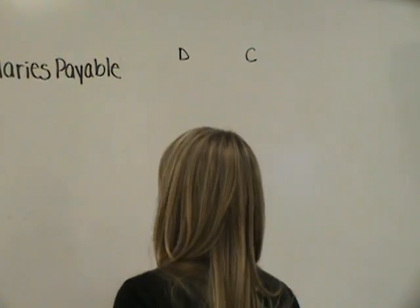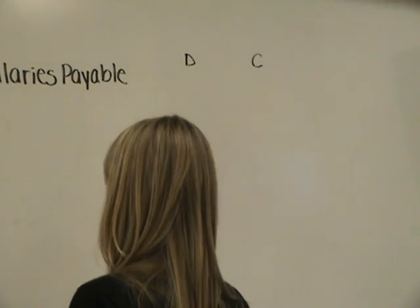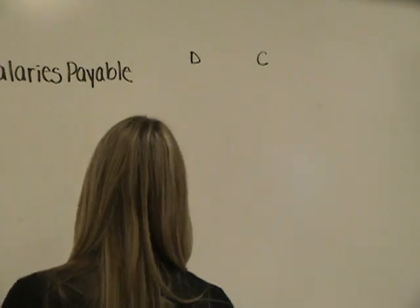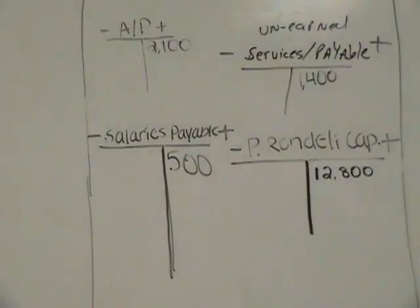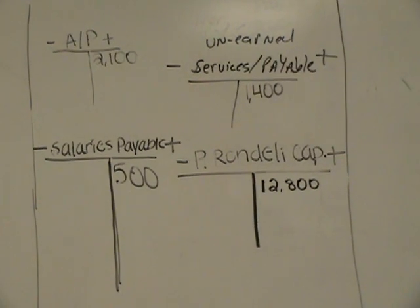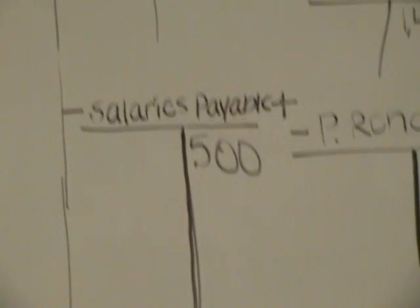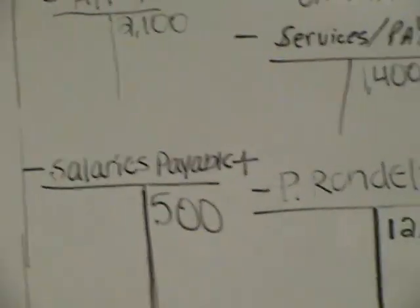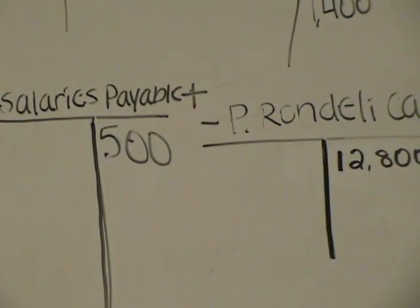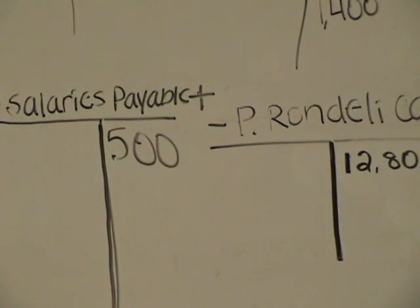How much do we owe on salaries, looking at our T-accounts? It says $500. That's right, $500. So, what's the $500 for? What do you think that's for? The date here is, what month? November. So, what do you think that $500 is for? October. That's right. For October, the prior month.